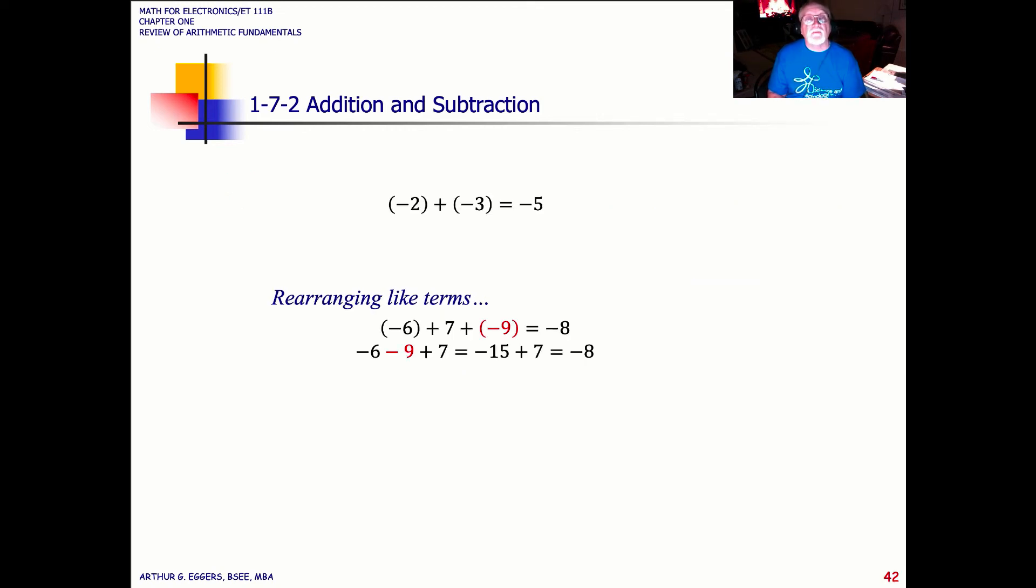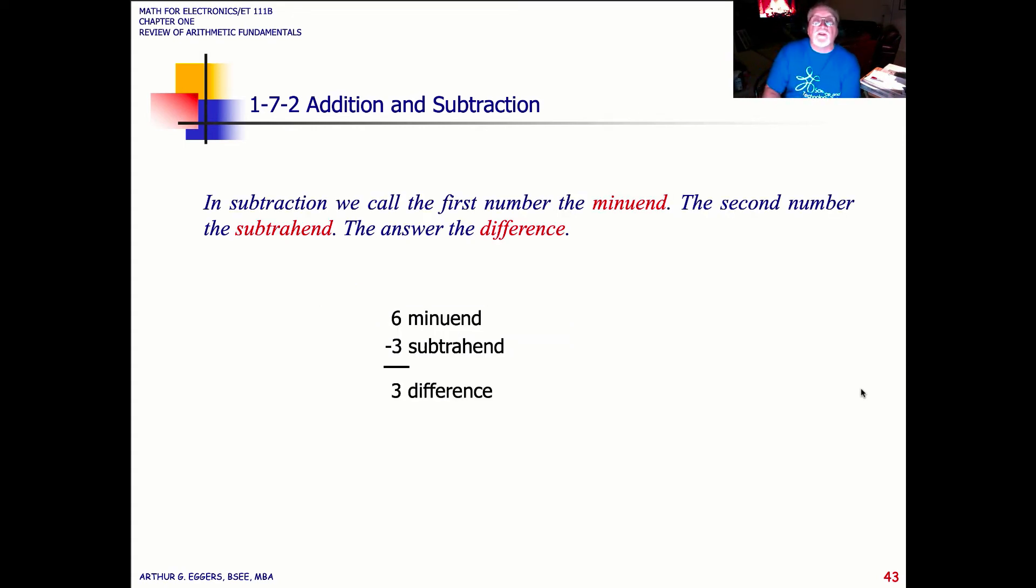See the example here, minus 2 plus a minus 3, it gives us a minus 5. We've moved entirely on the left side of the number line. In the next example, minus 6 plus 7 plus a minus 9, sometimes it's easier to rearrange the terms. You can do that. It's not going to hurt anything. So I'm going to put the two negative values up front, minus 6 minus 9, which gives us a minus 15. Then I'm going to add 7 to it, which gives us a minus 8. Sometimes it just makes it easier to do. In subtraction, we call the first number the minuend. We call the second number the subtrahend. And then the difference then becomes the answer.